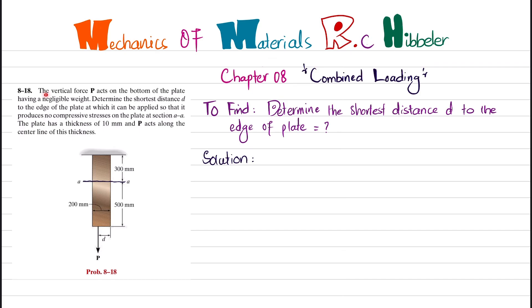The problem statement is: The vertical force P acts on the bottom of the plate having negligible weight. Determine the shortest distance D to the edge of the plate at which it can be applied so that it produces no compressive stress on the plate at section AA.